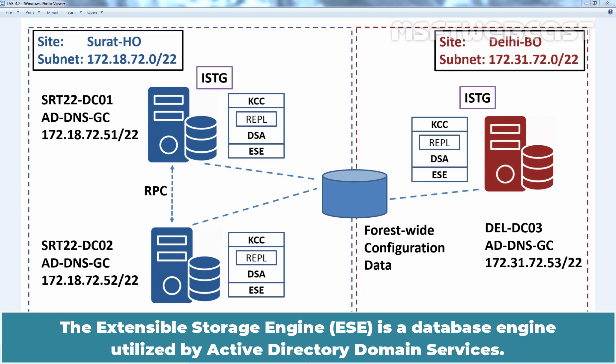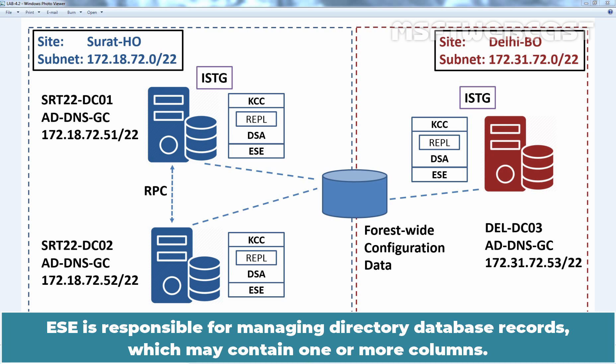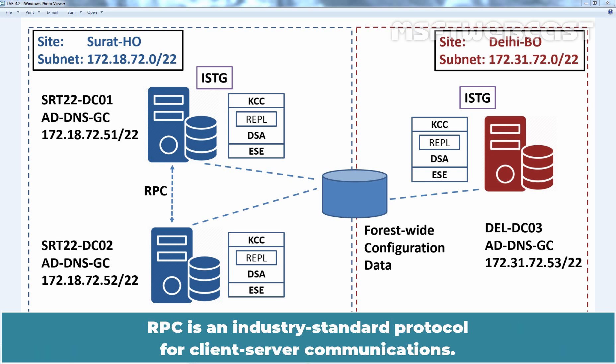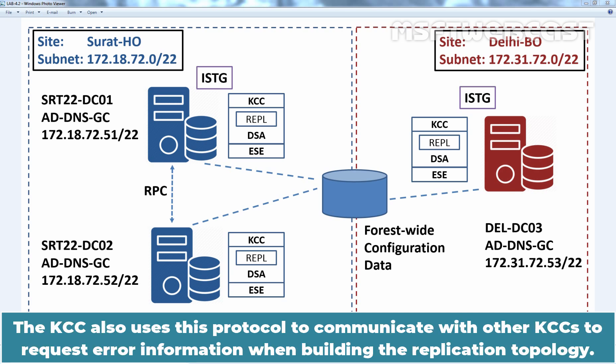Next we have ESE — the Extensible Storage Engine, a database engine utilized by Active Directory Domain Services. ESE is responsible for managing directory database records, which may contain one or more columns. The Directory Replication Service uses the RPC protocol to communicate replication status and topology to a domain controller. RPC is an industry-standard protocol for client-server communications, and the KCC also uses this protocol to communicate with other KCCs to request error information when building the replication topology.